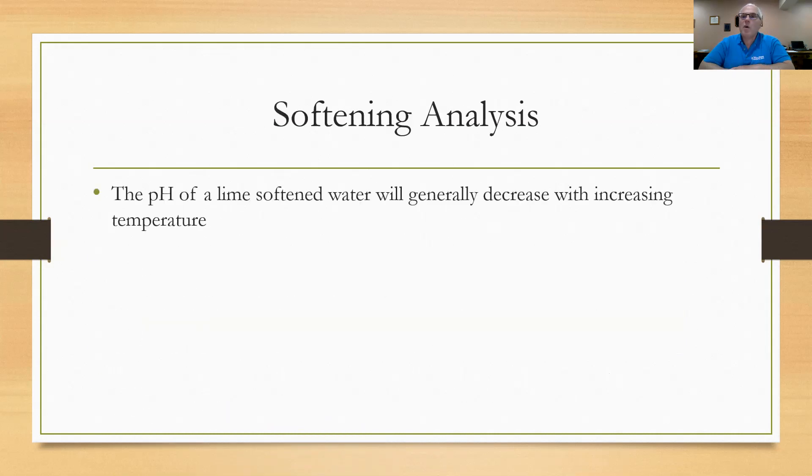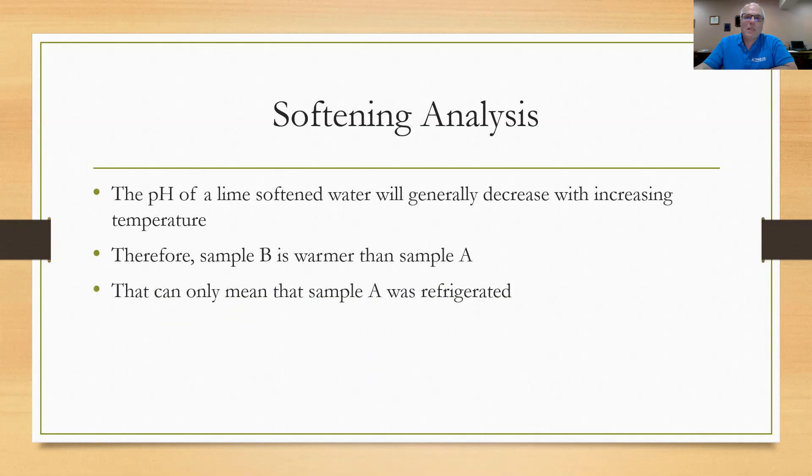pH of a lime softened water is generally going to decrease when you heat it up. When it begins to heat up or increases its temperature, the pH goes down. Therefore, sample B is warmer than sample A. It can only mean one thing. Sample A must have been refrigerated. The answer is one. Hope you did well on that.